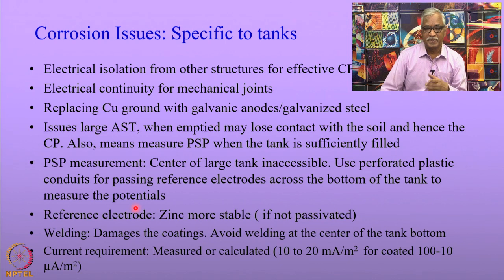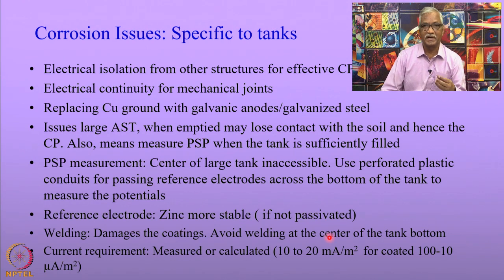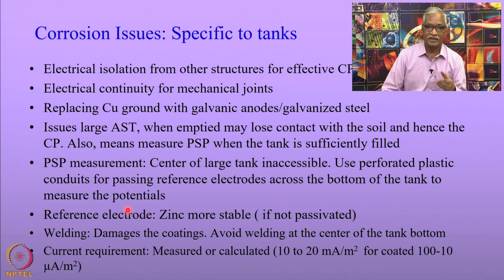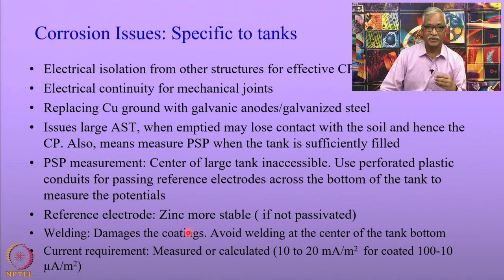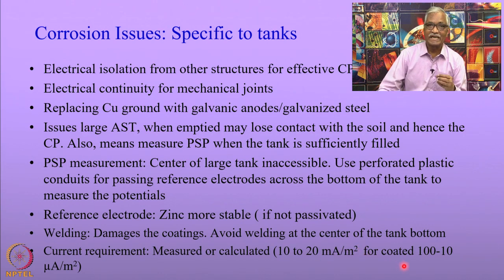Another issue specific to tanks is that during commissioning, one should avoid welding at the center of the bottom of the tank, but that is easier said than done. When welding is done there, the coating is damaged and the current requirement to protect the tank at that location becomes very high. Similar to pipelines, the current requirements for storage tanks can be either measured or calculated. Generally, the current requirement for protecting storage tanks lies in the range of 10 to 20 milliampere per meter square for bare tanks.